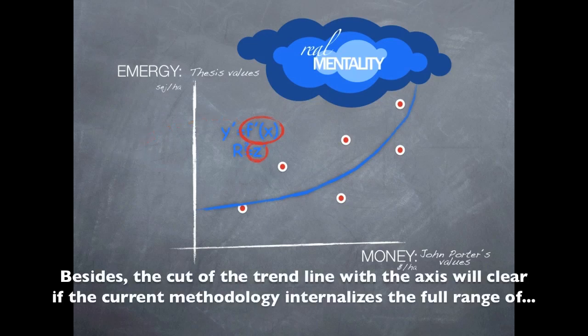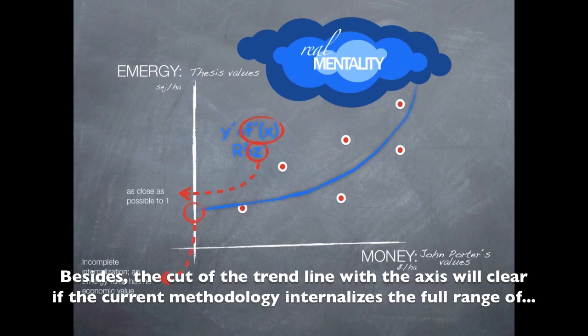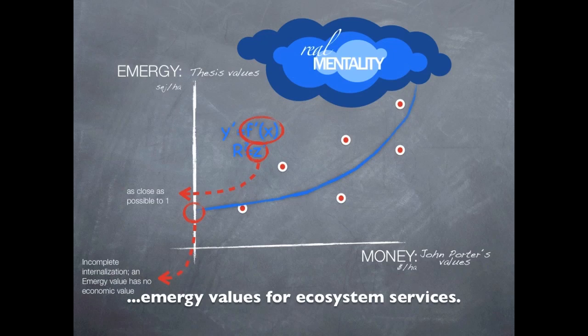Besides, the cut of the trendline with the axes will clear if the current methodology internalizes the full range of energy values for ecosystem services.